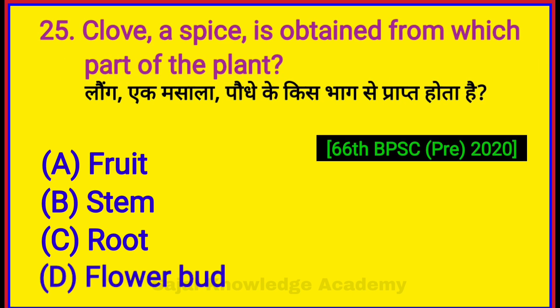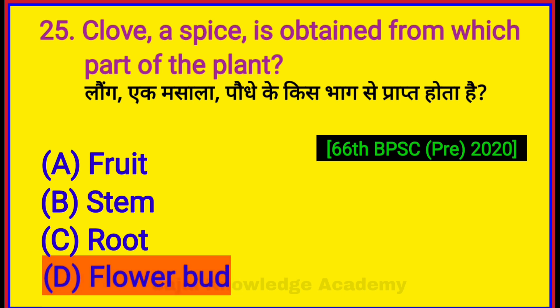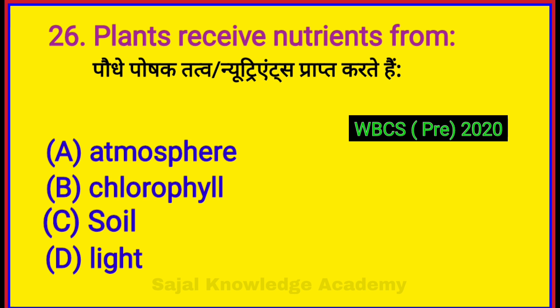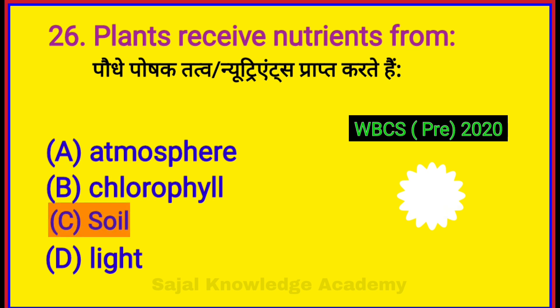Clove, a spice, is obtained from which part of the plant? Option D: Flower. Plants receive nutrients from? Option C: Soil.